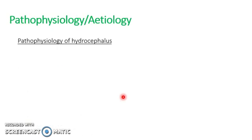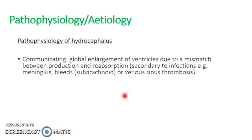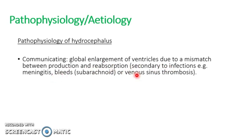Relating to the pathophysiology of hydrocephalus, we'll start with communicating. In communicating, there's a global enlargement of the ventricles due to a mismatch between production and reabsorption of CSF. This is usually secondary to infections such as meningitis, or bleeds, or venous sinus thrombosis.